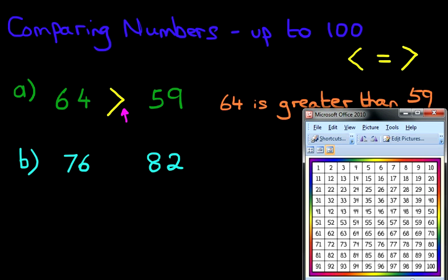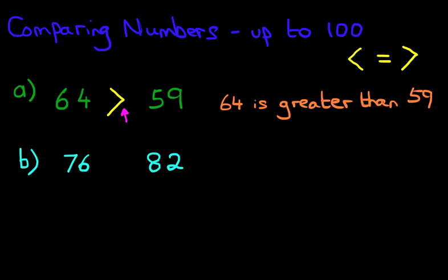Now if you were starting at number 1 and you're going all the way across to 10 and then starting at 11 and keep going, which number comes first? Is it 76 or is it 82? That's right. It is 76. So 76 is the smaller number. So the arrow is now pointing this way.